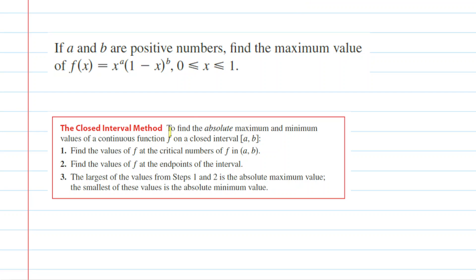In this question we are asked to find the maximum value of a function on a closed interval. Notice our closed interval is from a left endpoint of 0 to a right endpoint of 1. Because we have a closed interval and we are asked to find the maximum value, we are going to use the closed interval method.